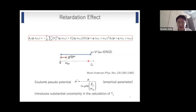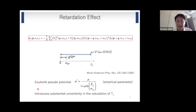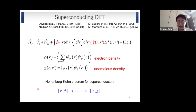The screened Coulomb interaction mu is renormalized and mu becomes mu-star — the so-called Coulomb pseudopotential. However, this parameter usually introduces substantial uncertainty in the quantitative estimate of Tc, because we have some ambiguity in estimating this factor. So usually we treat mu-star as an empirical parameter, and then we cannot perform a truly non-empirical calculation of Tc. To overcome this problem, there are two approaches.